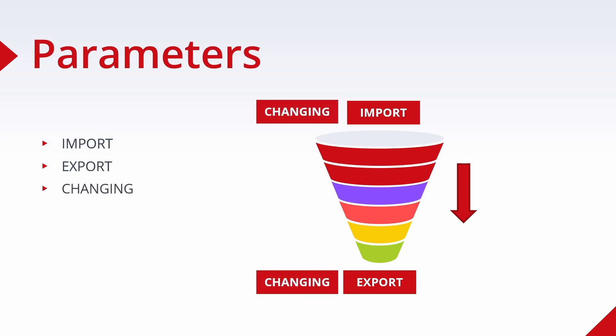Changing parameters are import and export parameters at the same time. They are variables that are passed to the function module, changed inside it, and returned to the calling program. The keyword CHANGING allows changing parameters to be used in the call. There is also an obsolete parameter type called TABLES - you should no longer use this keyword. Last but not least, exceptions occur if an error occurs in the function module and are returned to the calling program, which can react to the error accordingly using the EXCEPTIONS keyword.